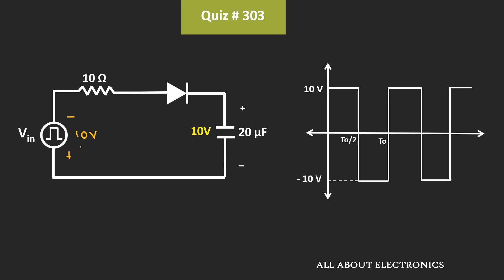And in this condition, since the voltage at the anode is less than the cathode, this diode will act as an open circuit. So the voltage across this capacitor will remain as it is. That means during this negative half cycle, the voltage across the capacitor is equal to 10V.